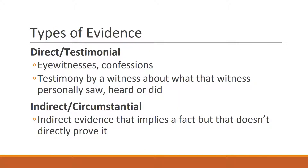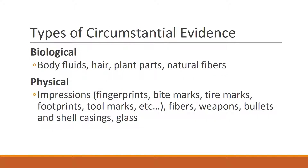We have two types of evidence. We have direct or testimonial evidence — this is eyewitnesses, confessions, and testimony by a witness about what that witness personally saw, heard, or did. And then we have indirect or circumstantial evidence. Indirect evidence implies a fact but doesn't directly prove that fact.